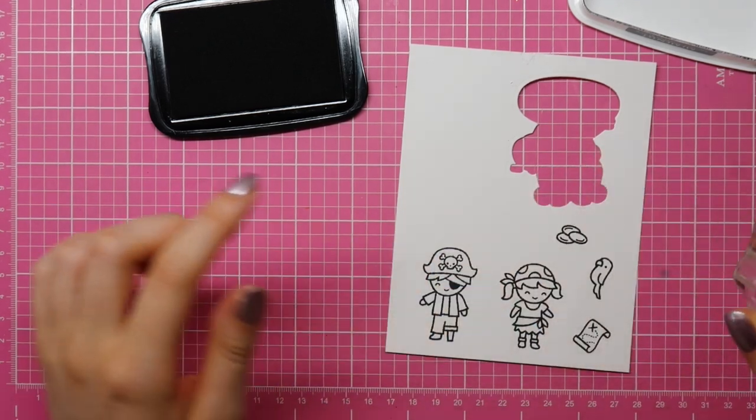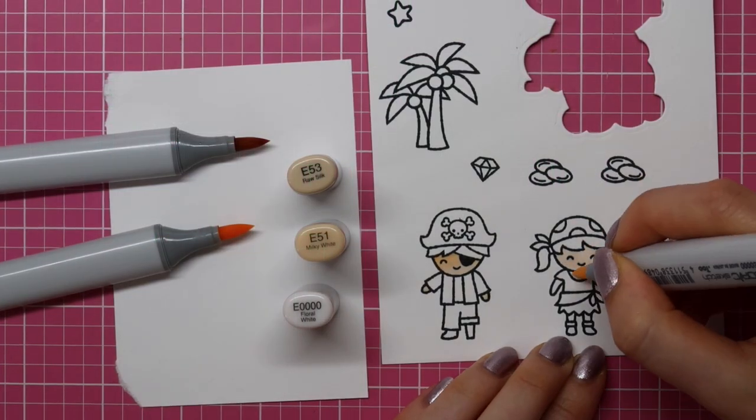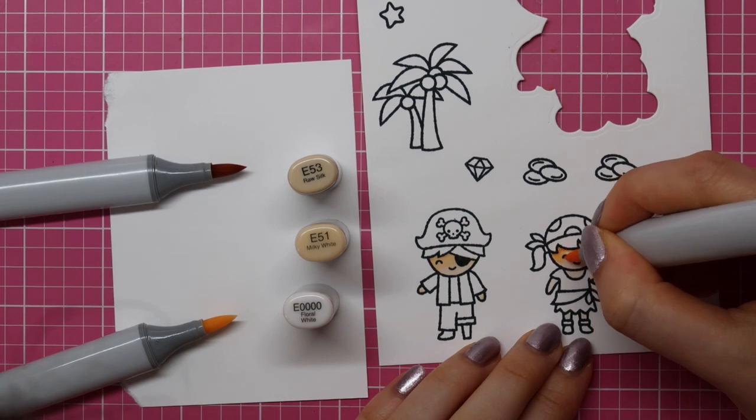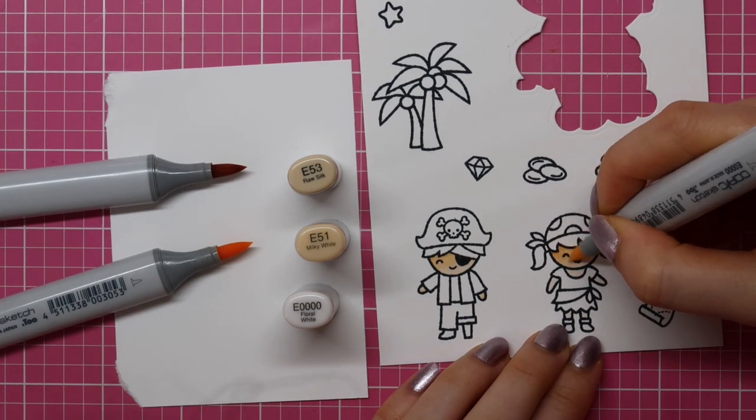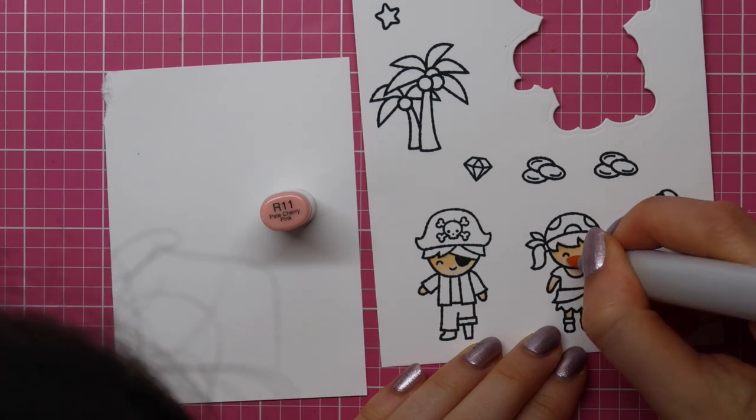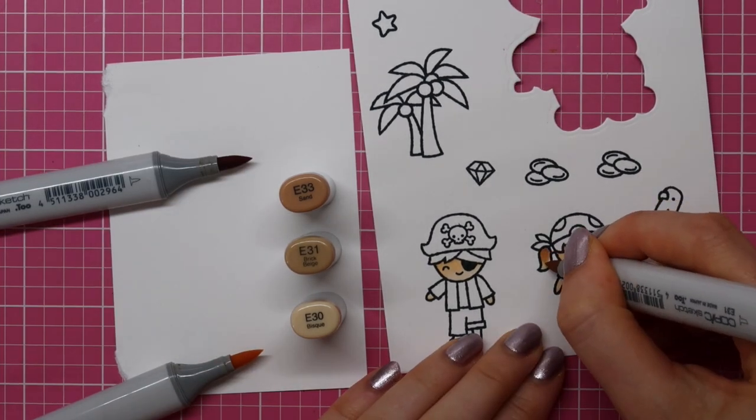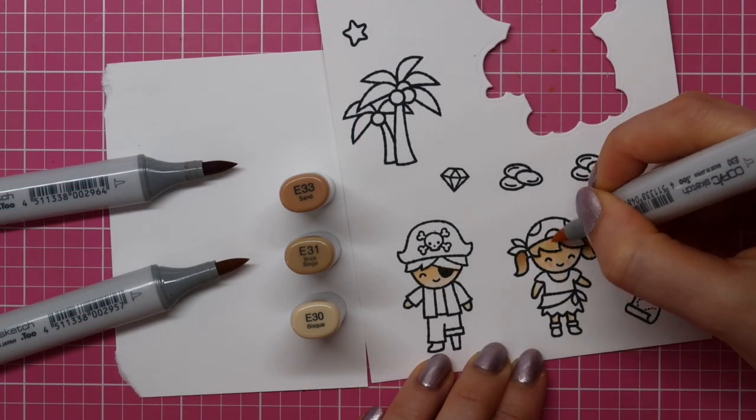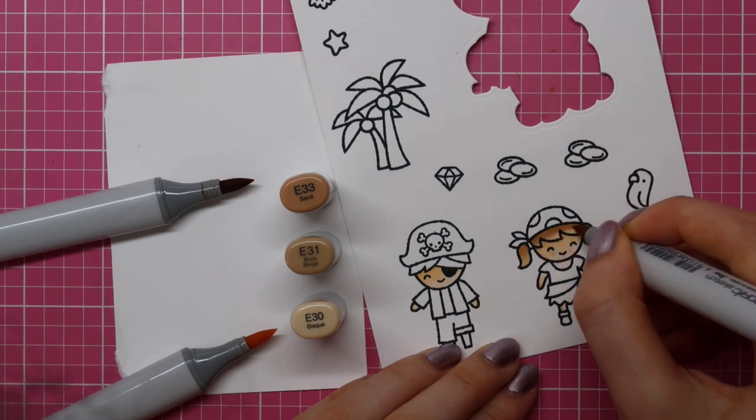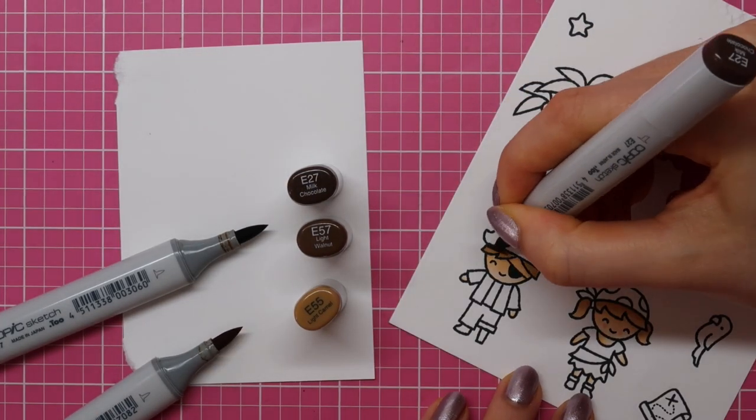Next I am stamping a bunch of images from the Ahoy Matey stamp set from Lawn Fawn on some Neenah Solar White cardstock using Memento Tuxedo Black ink. For my two little pirates I used E53, E51 and E0000 for their skin and then for their hair I used some different shades of brown. I am also using the R11 to add some blush to the cheeks of the little pirate girl and then for her hair I am using E33, E31 and E30. Coloring hair can be really easy as you can see. You don't have to spend hours on it if you are coloring tiny images like these. I just like to keep it really simple and quick.